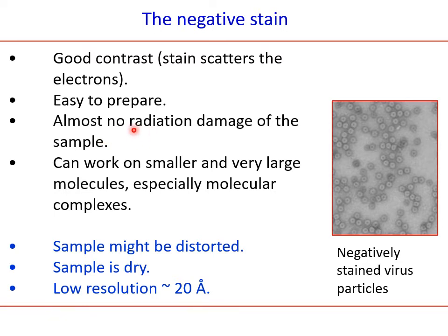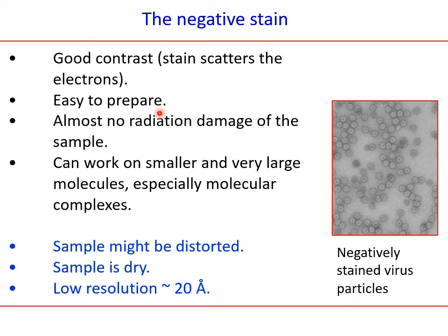The reason for least radiation damage links back to good contrast. Since the negative stain molecule gives good contrast, you can minimize the exposure time and still obtain a good quality image. Least exposure time to electrons reduces radiation damage. So good contrast forms the base for negligible radiation damage, and good contrast itself is based on the greater scattering coefficient of the stain molecule.